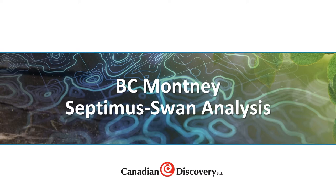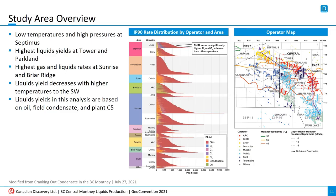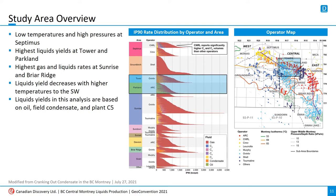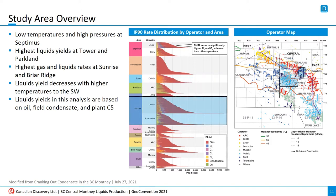Now let's dive into our study area from Septimus to Swan. Here is a map of the study area, and a bar chart with IP90 rate distributions for each operator and play. The areas are sorted from northwest to southeast. In the northwest, Septimus is the shallowest area with the lowest temperatures, but high pressure gradients. CNRL will report significantly more C2 and C3 volumes compared to other operators. The places with the highest liquids rates and yields are Ovintiv's wells at Tower and Arc's wells at Parkland. To the southeast at Sunrise, Ovintiv and Tourmaline are getting lower liquids yields, but some of the gas rates are so high that these wells can still produce up to 500 barrels per day.